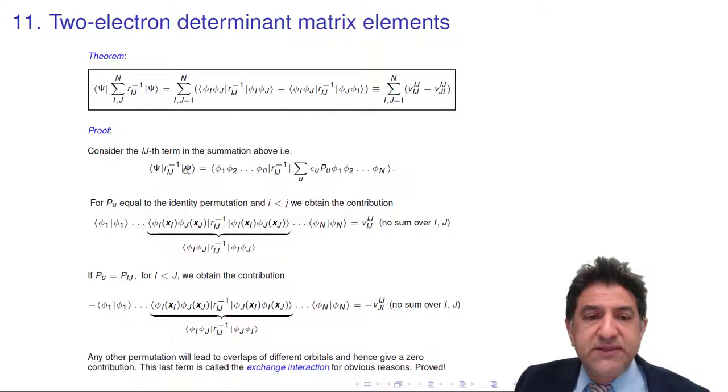So that was just for one term r i j. To get the complete result, we have to sum over all i j's because that's what the theorem is. And we get the result.